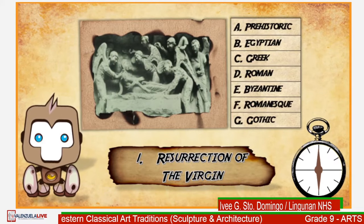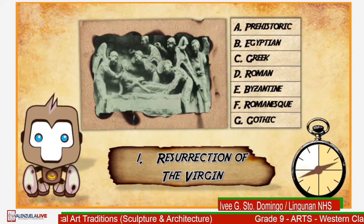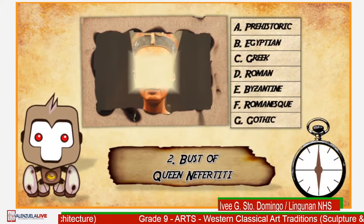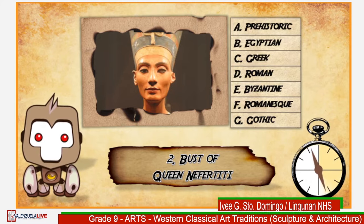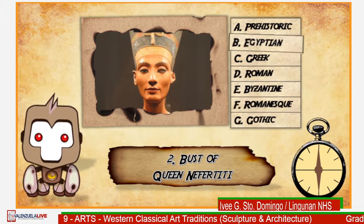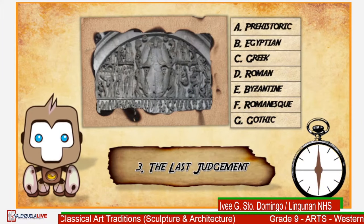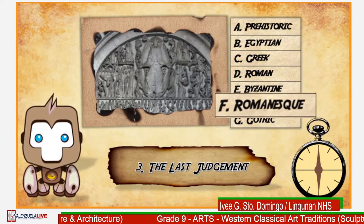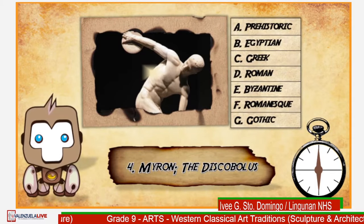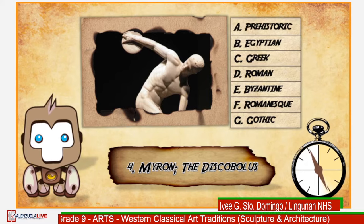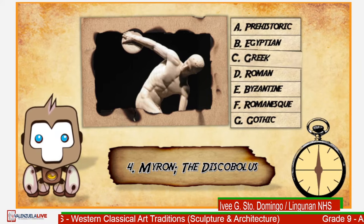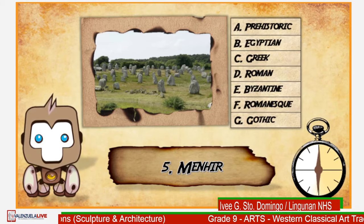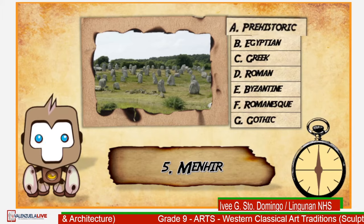Number 1: Resurrection of the Virgin. If your answer is letter G or Gothic, you are correct. Number 2: Bust of Queen Nefertiti. If your answer is letter B or Egyptian, that is right. Number 3: The Last Judgment. If your answer is letter F or Romanesque, you are also right. Number 4: Myron, the Discobulus. If your answer is letter C or Greek, you are doing great. Number 5: Menhir. If your answer is letter A or prehistoric, that is correct.